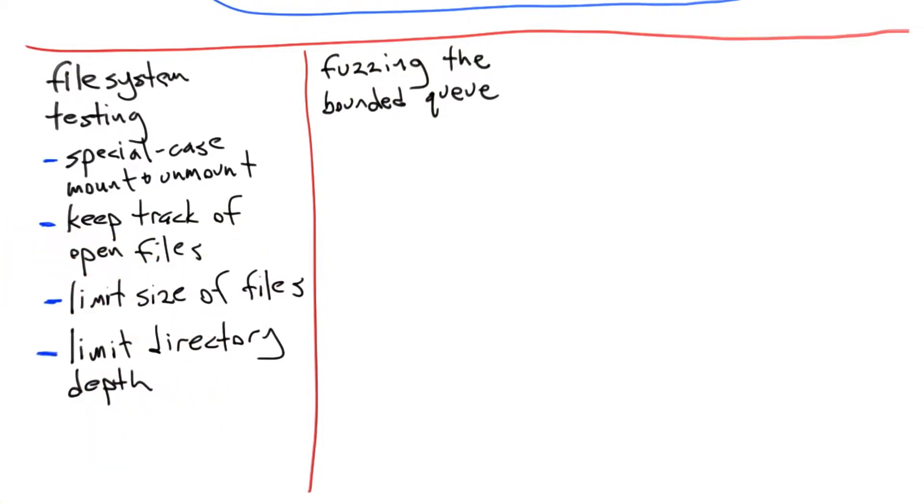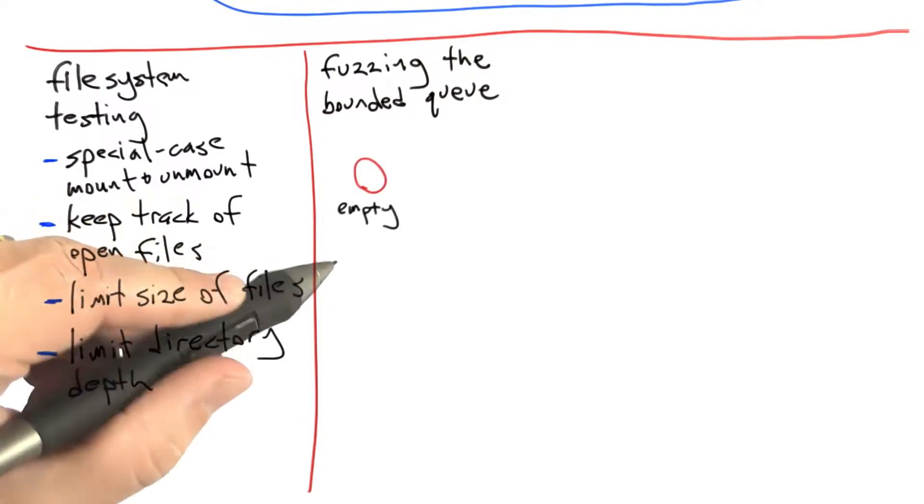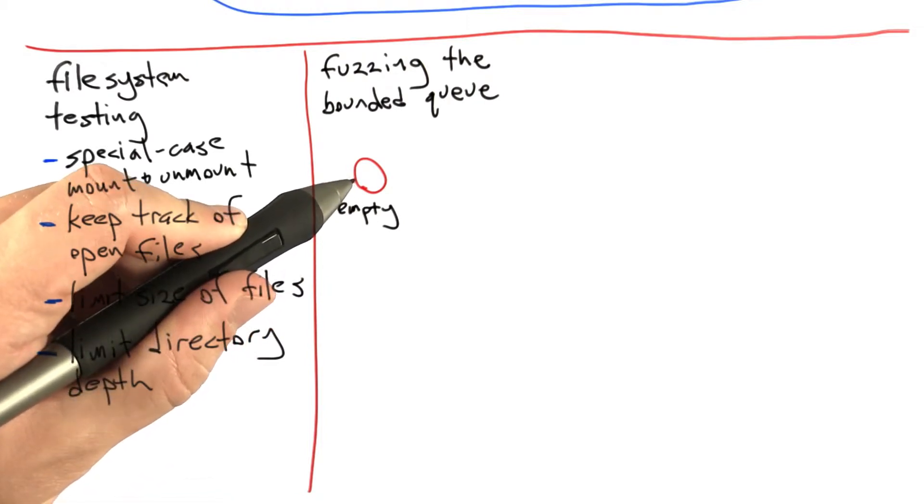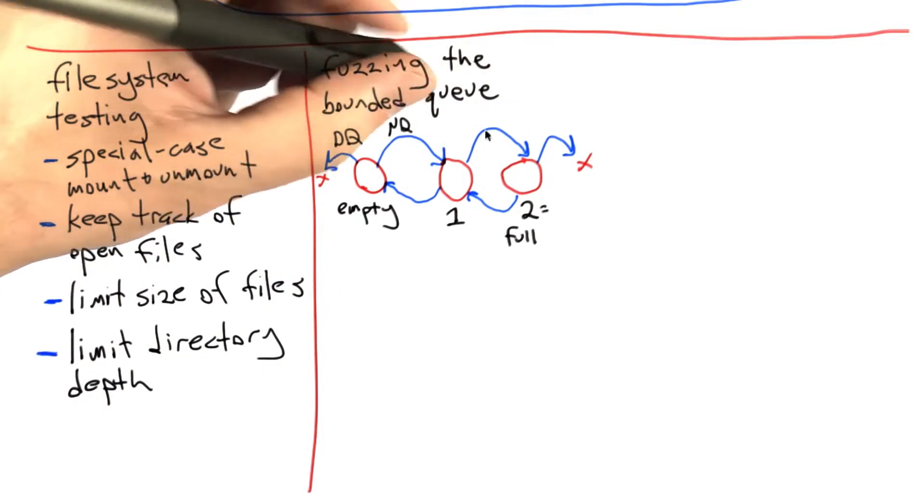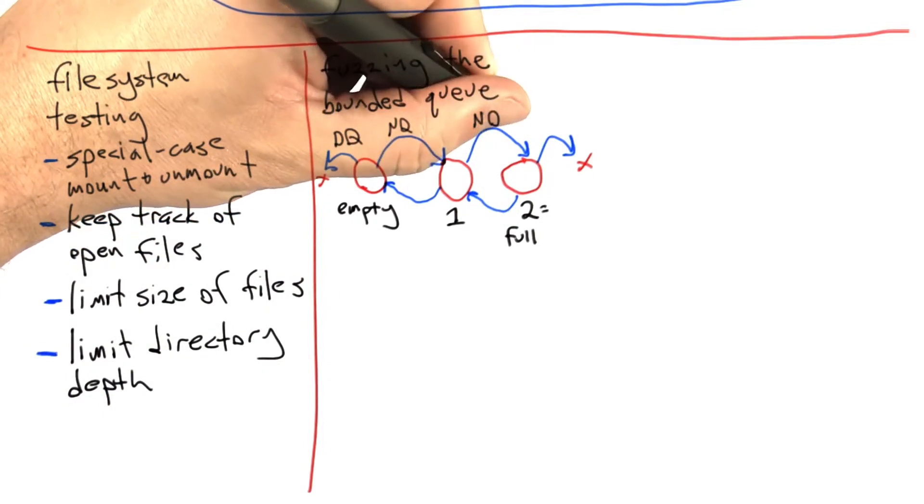So what we're going to do is we're going to look at the queue as a finite state machine, and we're going to see what kind of states we can drive that machine into using the random tester. So we're going to start off with an empty queue, and 50% of the time, at this point, we're going to make a dequeue call, which is going to fail. 50% of the time, we're going to enqueue something, resulting in a queue containing one element.